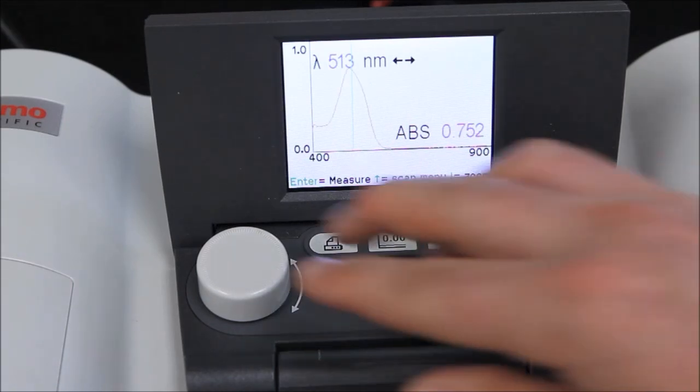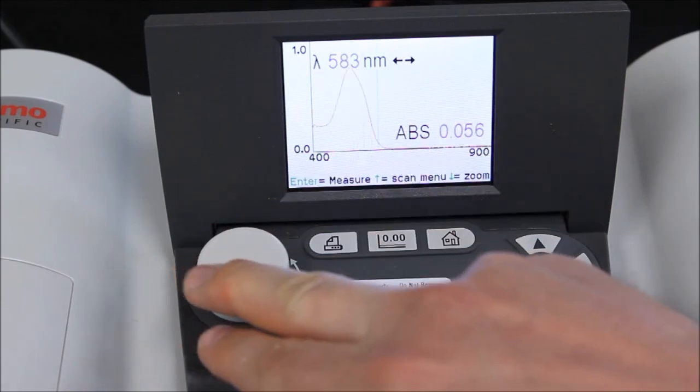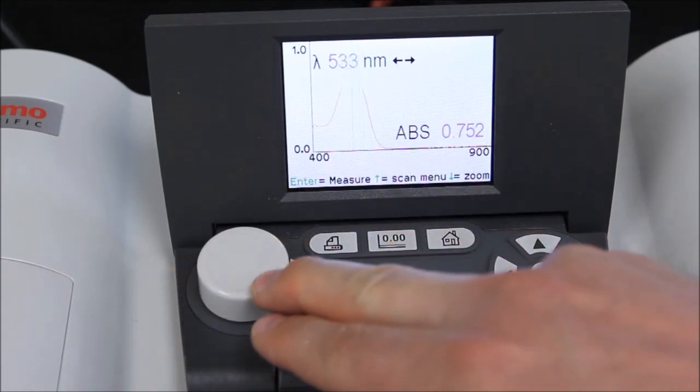When the scan is complete, use the knob to move the vertical line to yield information about the absorbance values at various wavelengths.